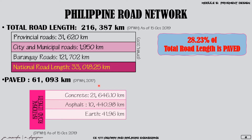Frontier roads consist of 41.96 kilometers of earth or soil material, and the remaining length of the national road — 889.21 kilometers — is made up of gravel. This data is the latest available from the DPWH, which is from 2019.